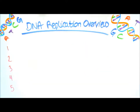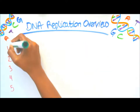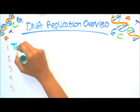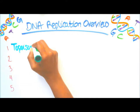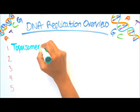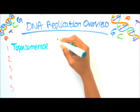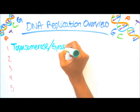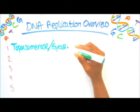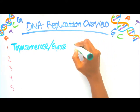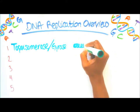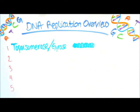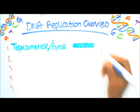Here's the overview of DNA replication. First up we have topoisomerase — also called gyrase — and what it does is relax the supercoil double helix. Here's our supercoil double helix and it relaxes it.